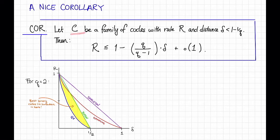So here's what the corollary says. Let c be a family of codes with rate R and distance delta, which is less than 1 minus 1 over q. So in the picture, now we're over in this region. Then, this corollary says, the rate R is bounded above by 1 minus q divided by q minus 1 times delta plus some little o of one term. That is, this is a term that goes to zero as N goes to infinity.